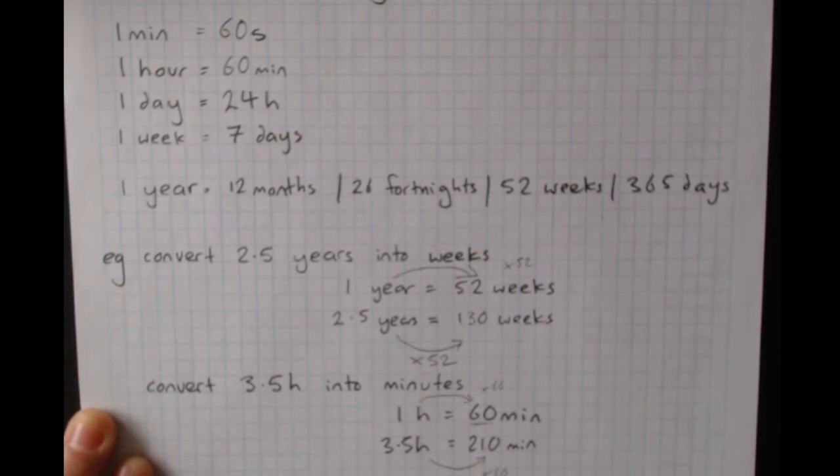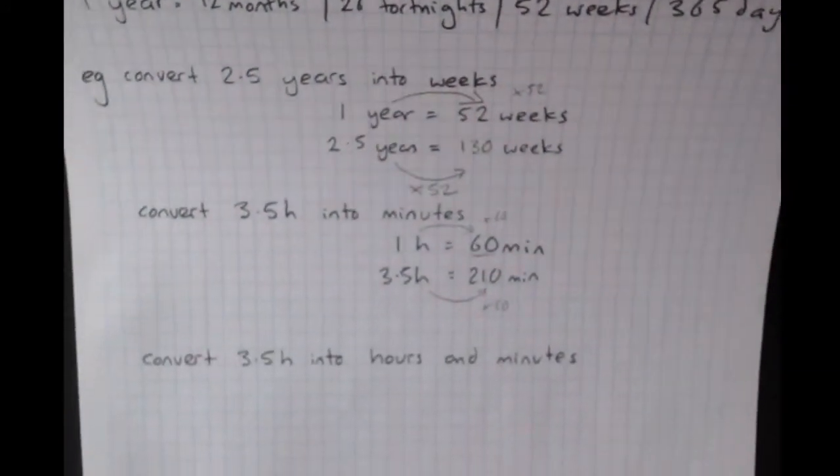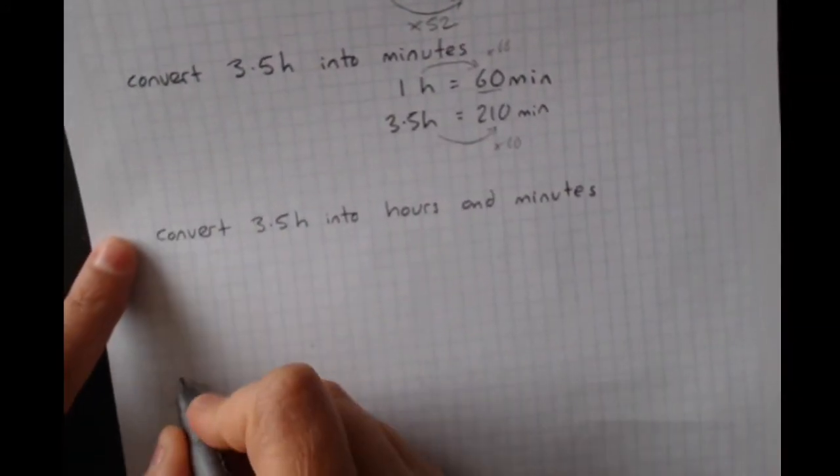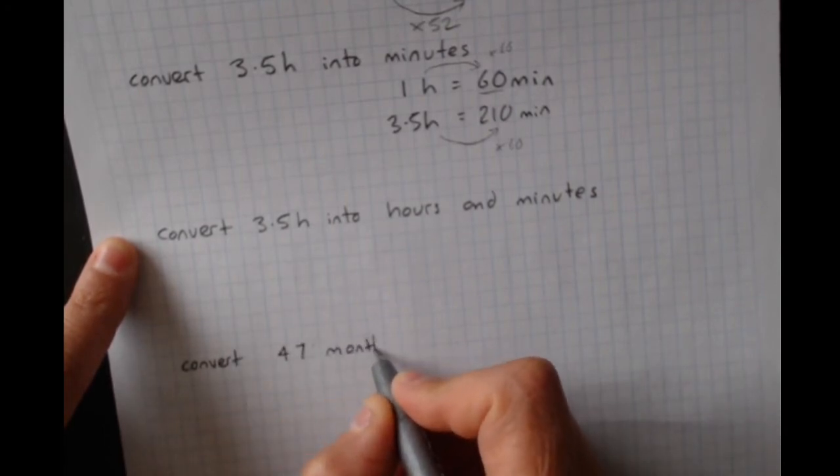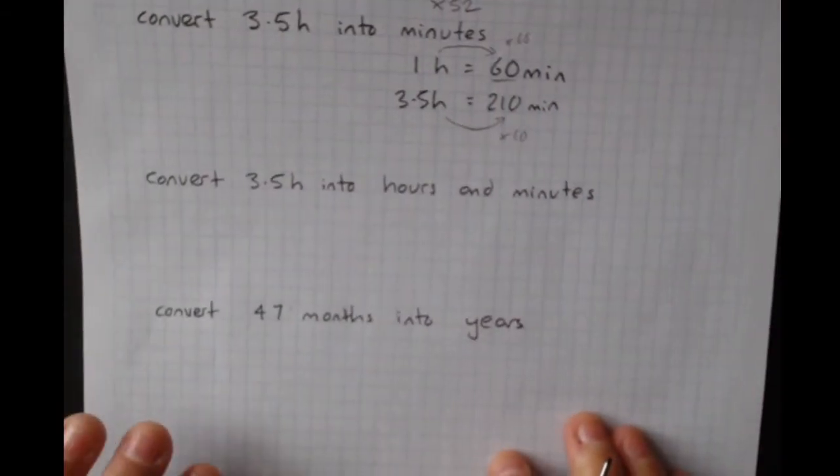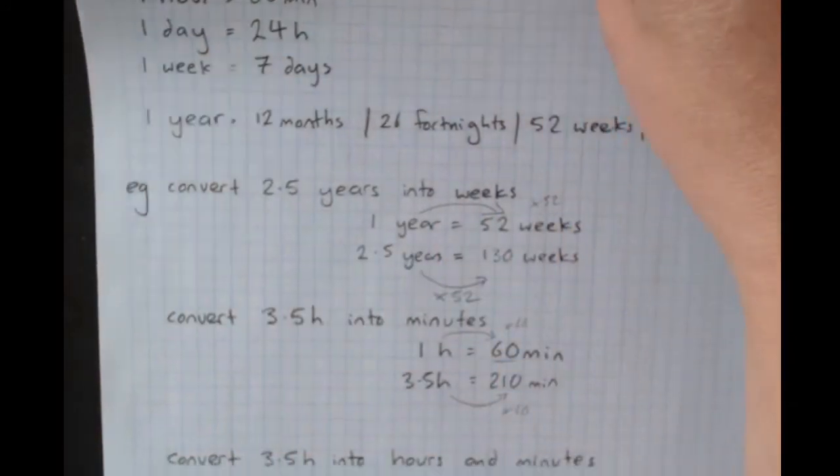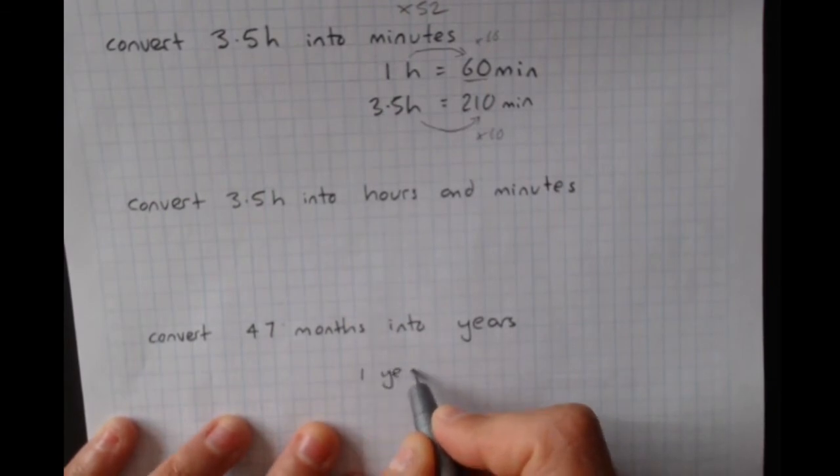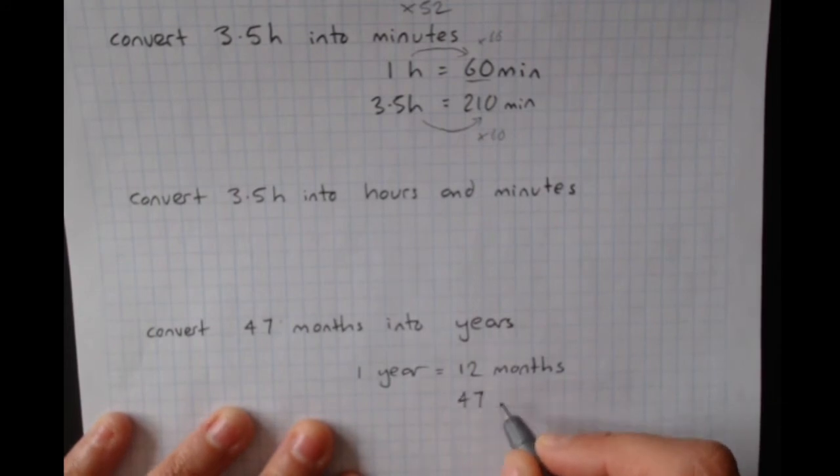Sometimes we'll get questions where we're dividing, and this really helps us here too. So I'm actually just going to scoot down to the bottom and write an extra question because I will come back to this one. Convert 47 months into years. Check the relationship between years and months, and write that relationship. Now 47 months. I've got months over here. 47 months.